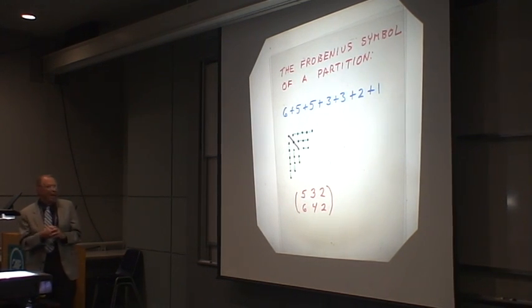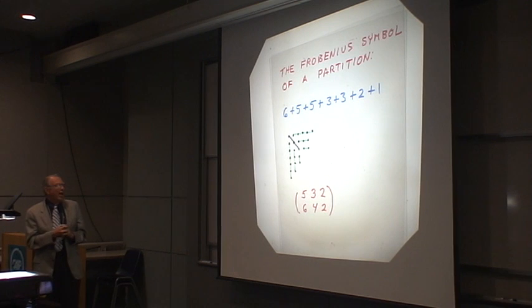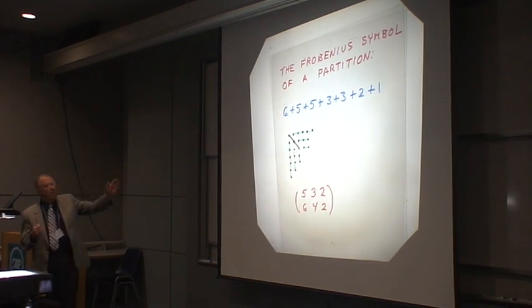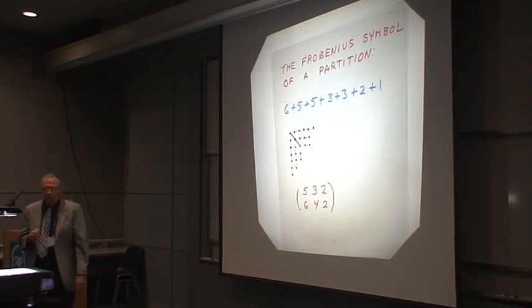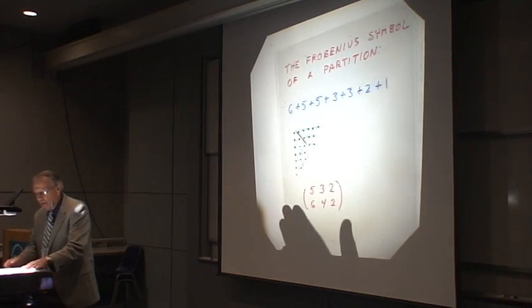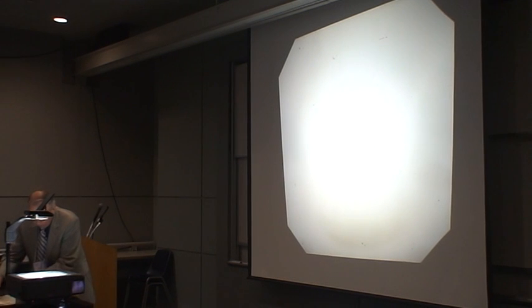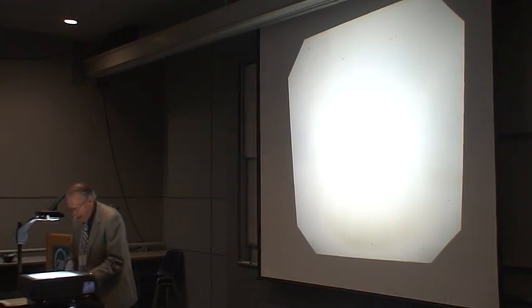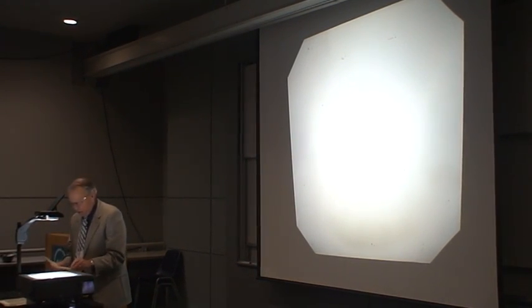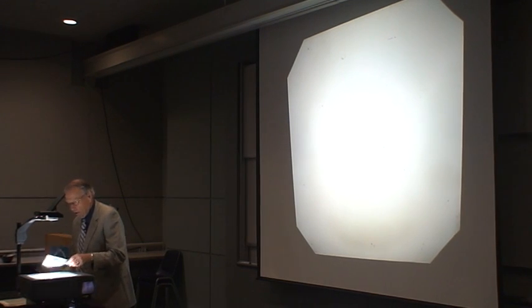You can't have a zero as the last entry in a row. There is, via this means, a perfect one-to-one correspondence between the Frobenius symbol and ordinary partitions. Here is how you produce the correspondence.